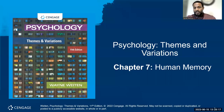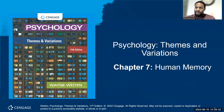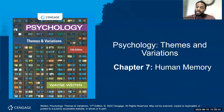Greetings, scholars. I hope you're well. This is Chapter 7, the lecture of Chapter 7. We'll talk about human memory, the different processes of memory — the encoding process, the storage process, and then how we retrieve. There'll be several videos that I won't play during this recording, but I'll have them listed on the YouTube channel in the description.